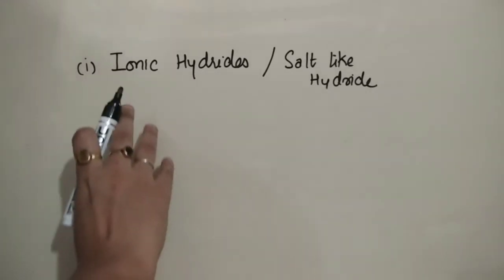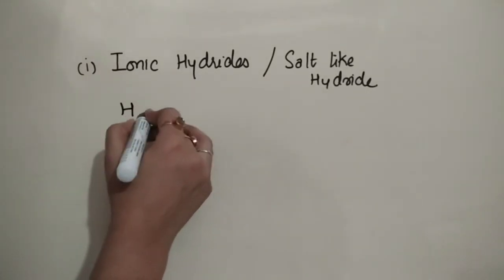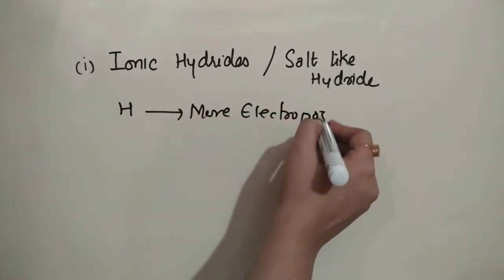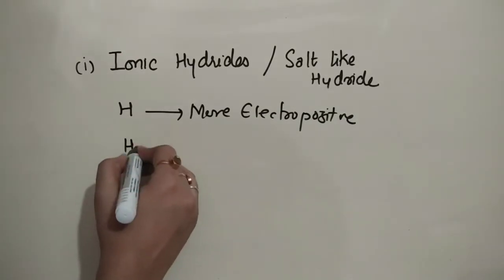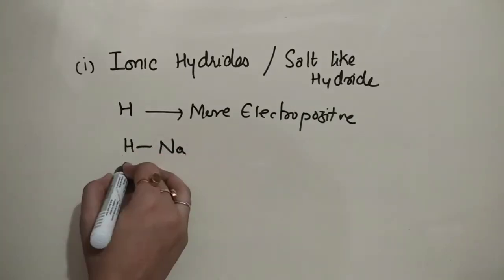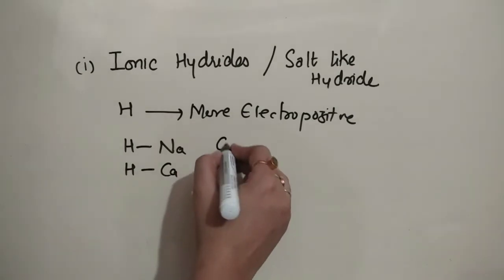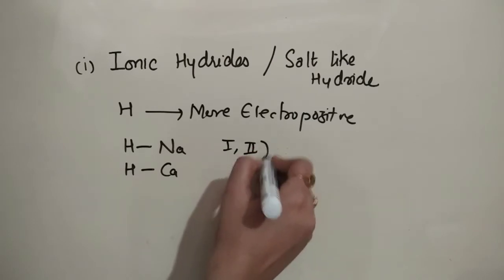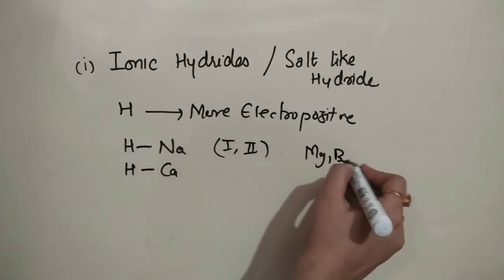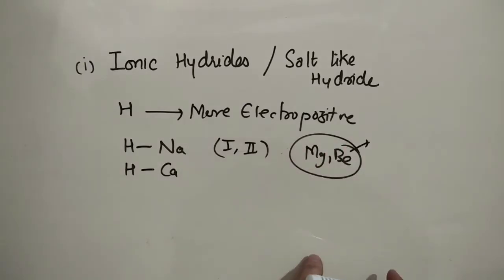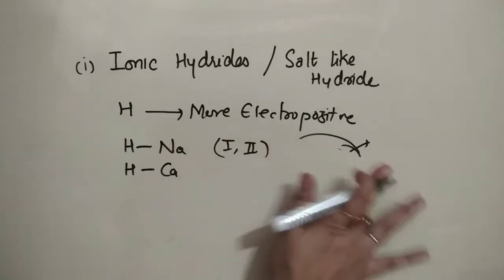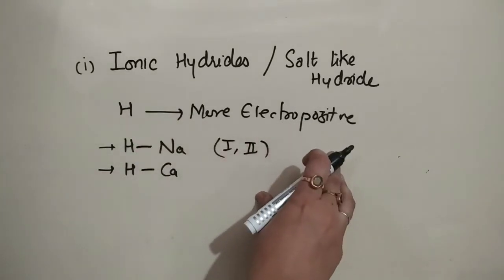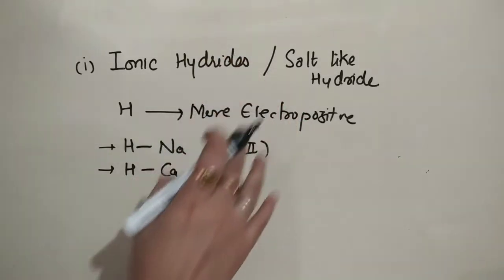As the name itself suggests, ionic hydrides are formed whenever hydrogen reacts with a more electropositive element. For example, if hydrogen is reacting with sodium or calcium — that is, Group 1 and Group 2 S-block elements, except magnesium and beryllium — it forms ionic hydrides.